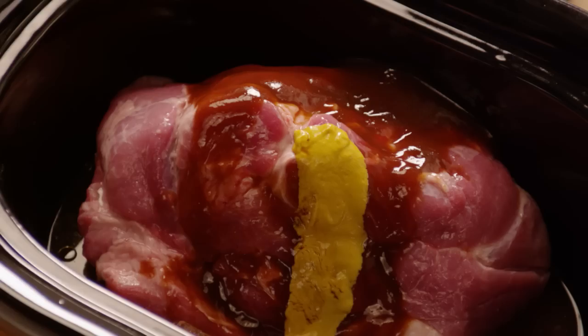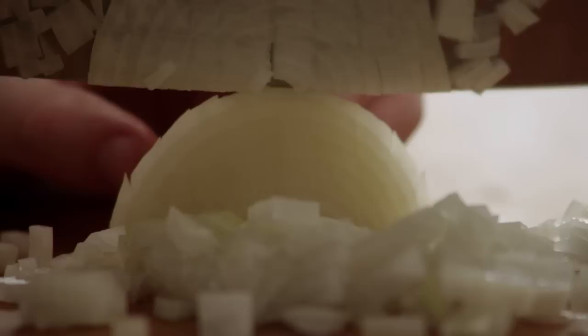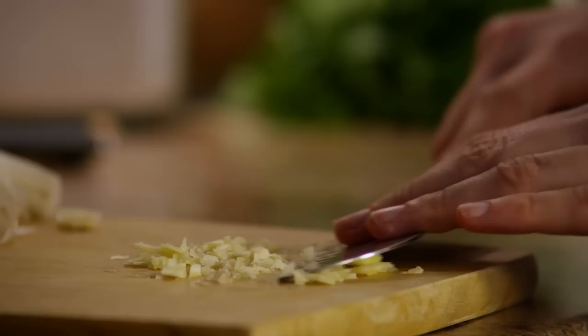Now chop one extra large onion, about two cups. Mince and crush two garlic cloves and add those along with a teaspoon and a half of dried thyme.